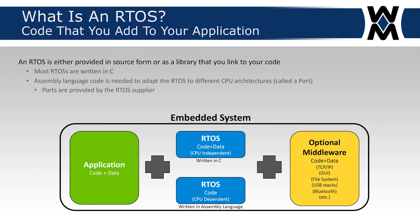From a different perspective, an RTOS is code that you add to your application to provide services. An RTOS is either provided in source form or as a library that you link to your code. Most RTOSs are written in C, and assembly language is needed to adapt the RTOS to different CPU architectures — that's called a port. Most RTOSs don't understand the architecture of the CPU, so you need that RTOS CPU-independent section of code, which is typically written in assembly language.